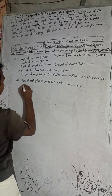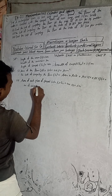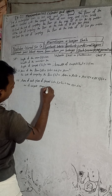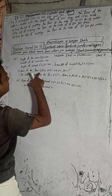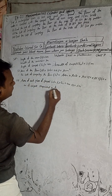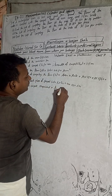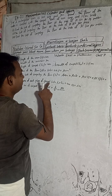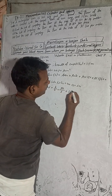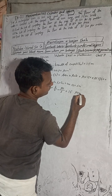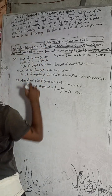Number of carpets required equals total area of the floor divided by area of one piece, that is 90 divided by 6, which equals 15. So the number of carpets required is 15 pieces.